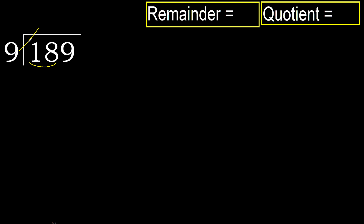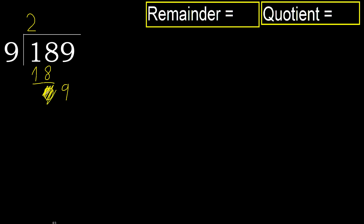9 multiplied by 2 is 18. 18 is not greater, ok. 18 minus 18 is 0. Next. Eliminate 0 on this side. 9 multiplied by 2 is 18, is greater.